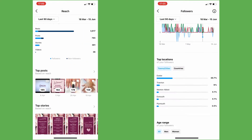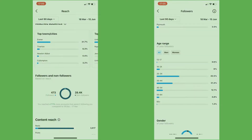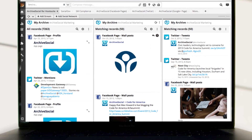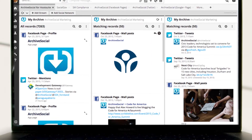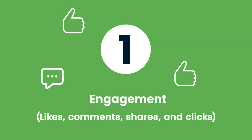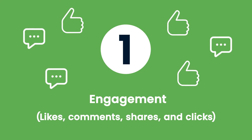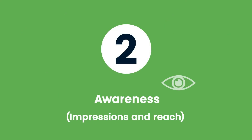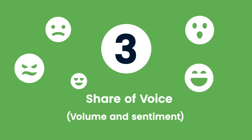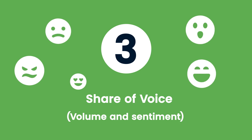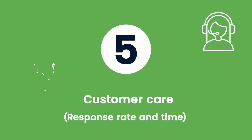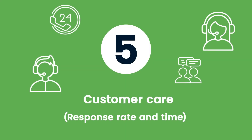You can track the performance of your social channels using the provided insight tools or with external online tools such as Hootsuite Analytics. The most essential metrics to track are: engagement (likes, comments, shares, and clicks), awareness (impressions and reach), share of voice (volume and sentiment), ROI (referrals and conversions), and customer care (response rate and time).